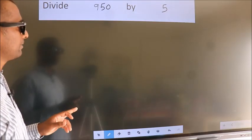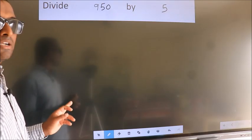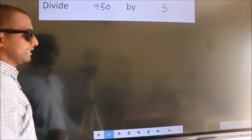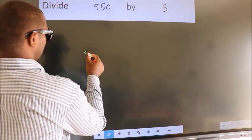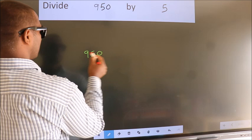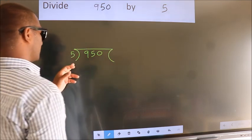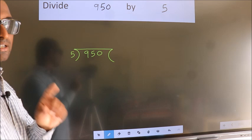Divide 950 by 5. To do this division, we should frame it in this way. 950 here, 5 here. This is your step 1.